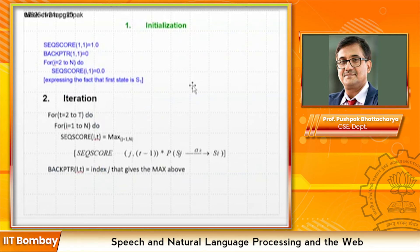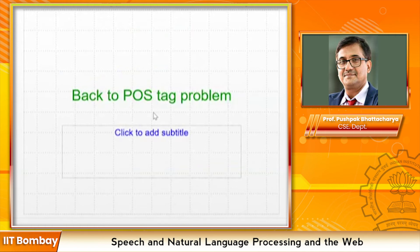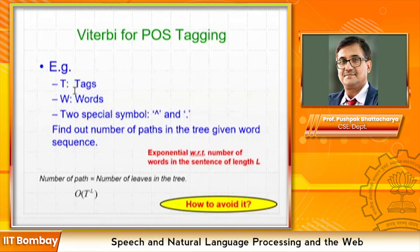You iterate over the observations and when all observations are exhausted, you follow the back pointer to get the highest probability path. Converting the ideas into an algorithm is not a tough task. Now going back to the part of speech tagging problem: we illustrated Viterbi decoding with only two states and two symbols, but in part of speech tagging we deal with multiple words, many tags (about 30–40), and huge vocabularies of 30,000–40,000 words.